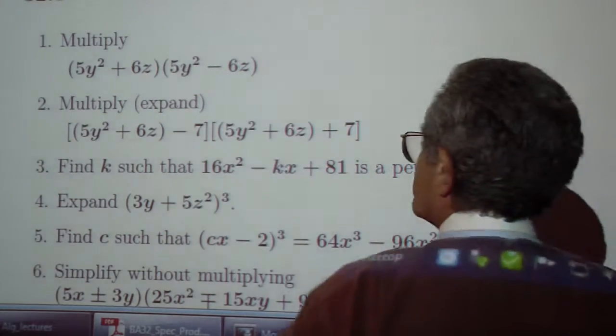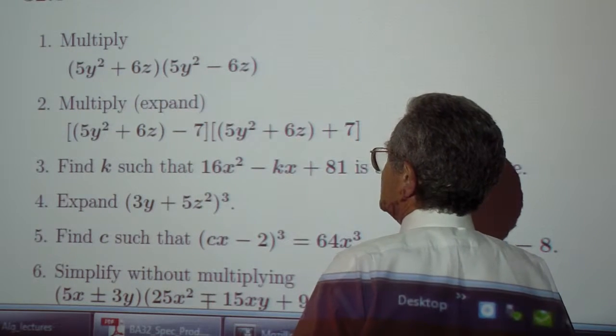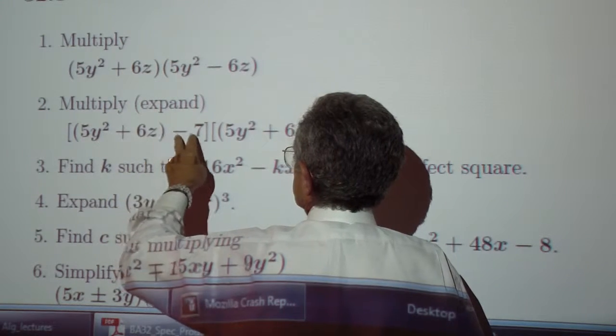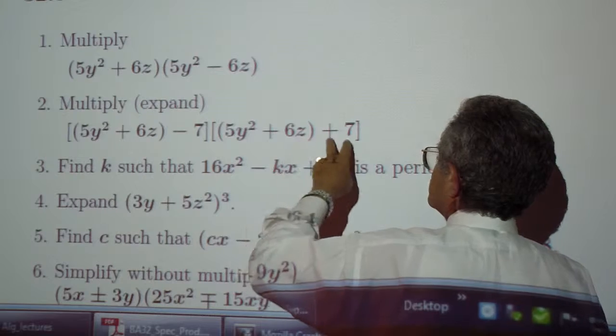Exercise 1, multiply 5y squared plus 6z by 5y squared minus 6z. Exercise 2, multiply 5y squared plus 6z minus 7 times 5y squared plus 6z plus 7.